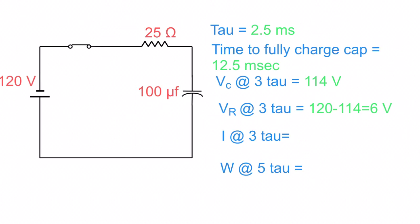Using Ohm's law, we would take 6 divided by 25 to get what our current is, which is 240 milliamps.